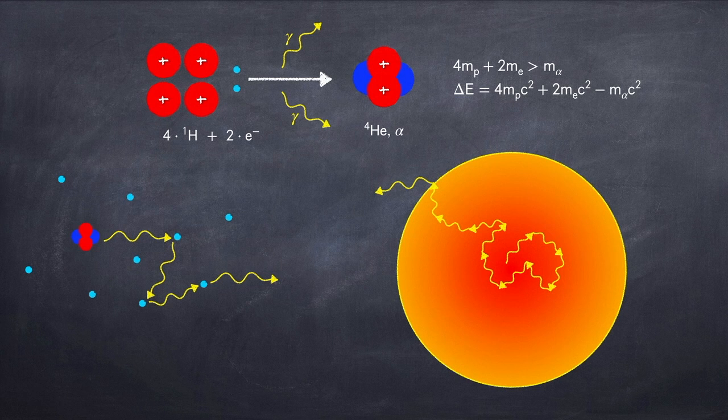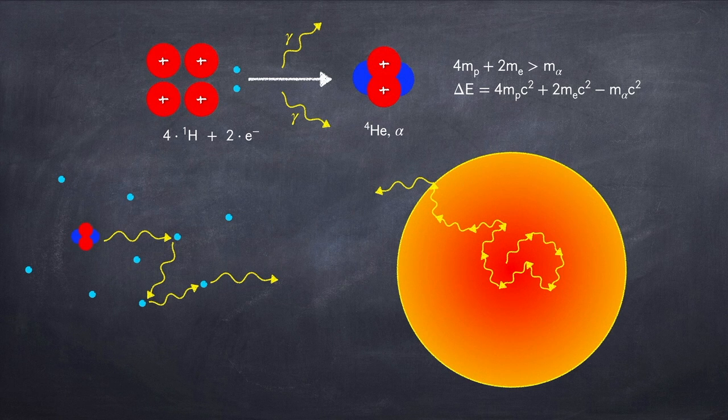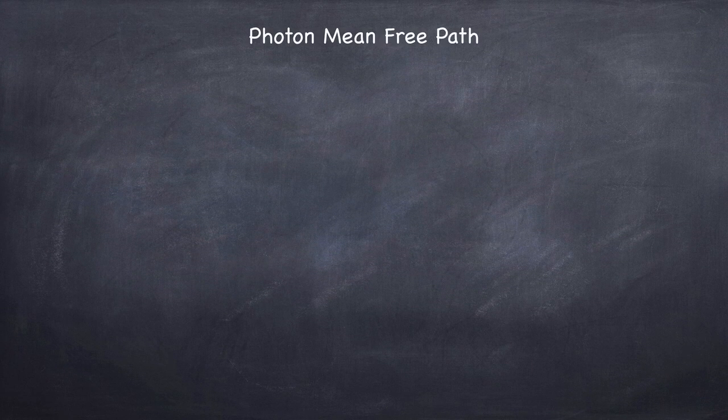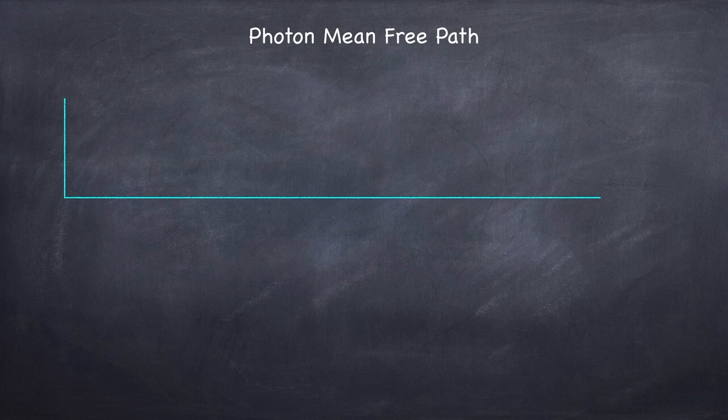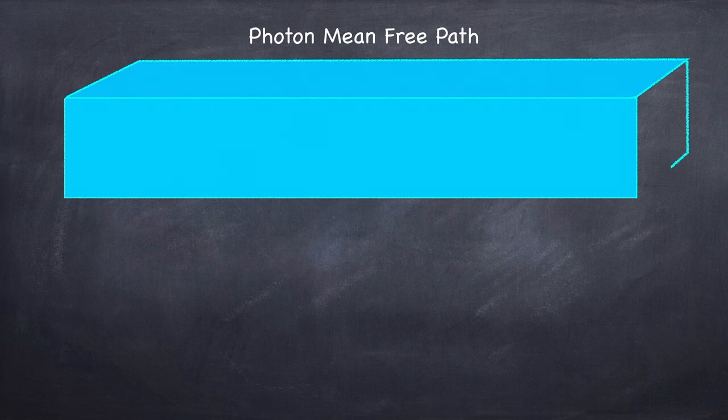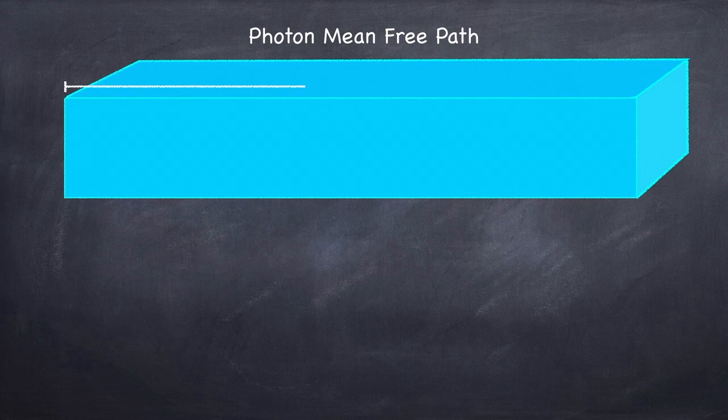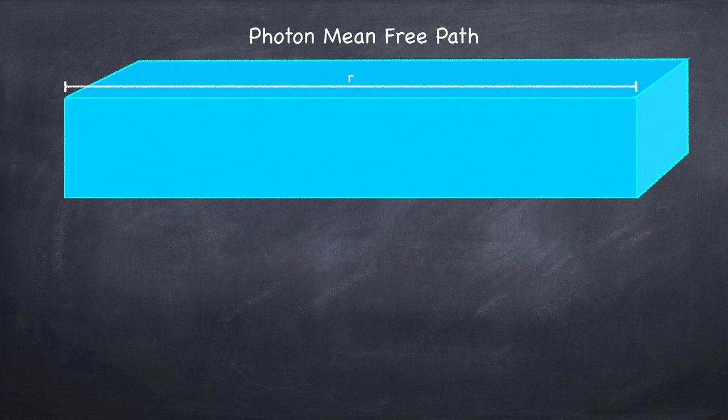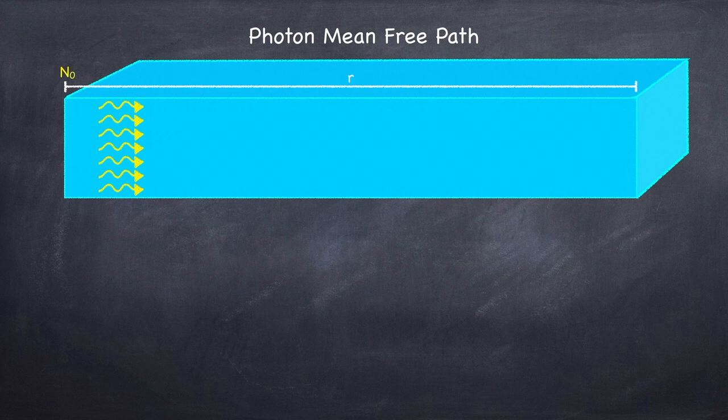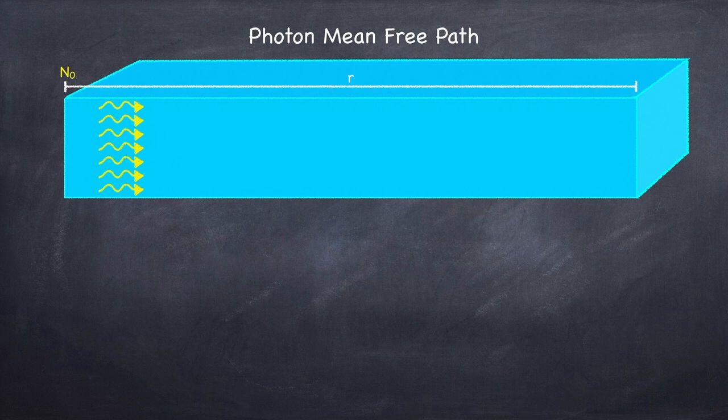In order to do this, we need to know the average distance a photon will travel before scattering off an electron. This is called the photon mean free path. Imagine we have a volume filled with some uniform density of electrons. Let's say the width of this volume is r. And let's say we have some initial number of photons traveling through this volume, which I'm going to call n-naught.